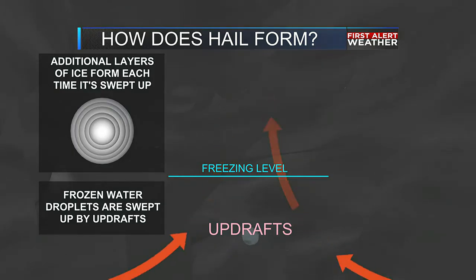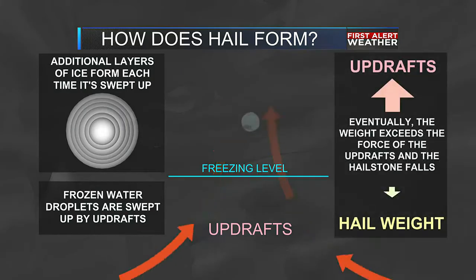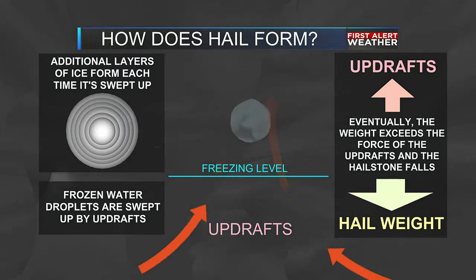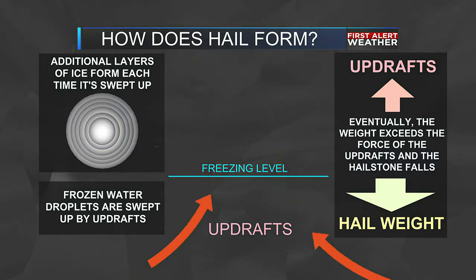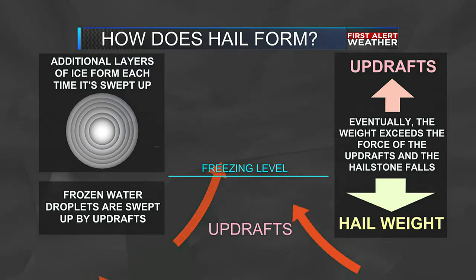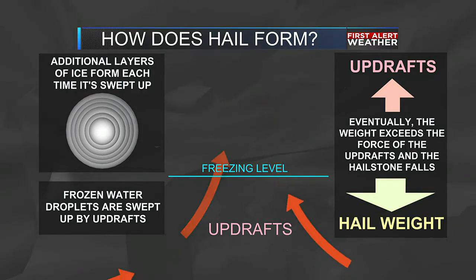Eventually, the water droplet gets so heavy that its weight exceeds the updraft strength. Those strong updraft winds pushing up through the thunderstorm can be on the order of 100 miles an hour. Eventually, the actual weight of that hailstone gets too great for the updraft, and the hailstone just falls to the ground. By that time, a lot of these hailstones can be very, very large in diameter.